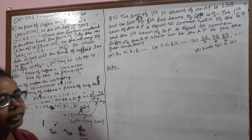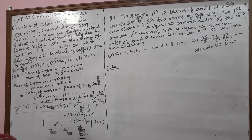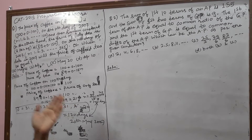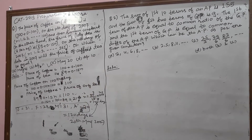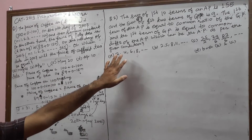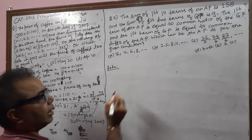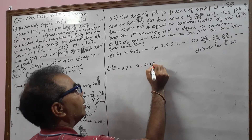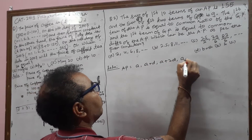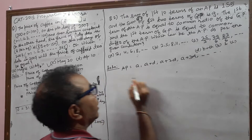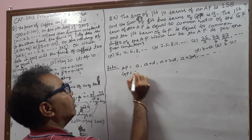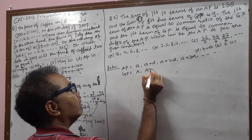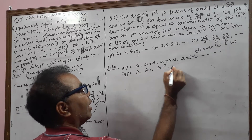Second question: The sum of the first 10 terms of an AP is 155, and the sum of the first two terms of a GP is 9. The first term of the AP equals the common ratio of the GP, and the first term of the GP equals the common difference of the AP. You have to find the sum in arithmetic progression.